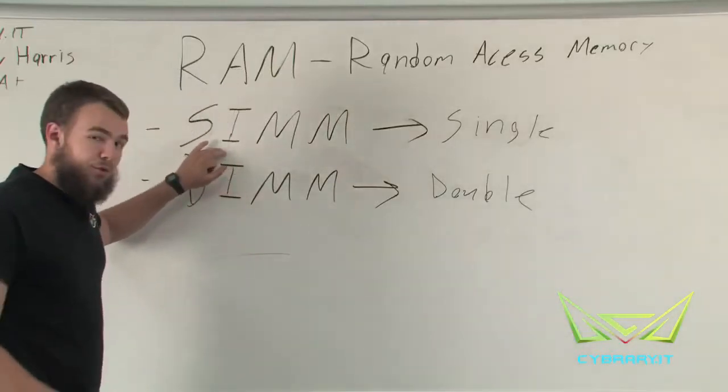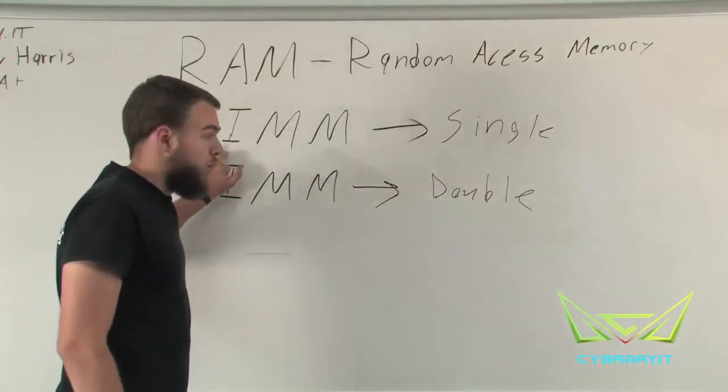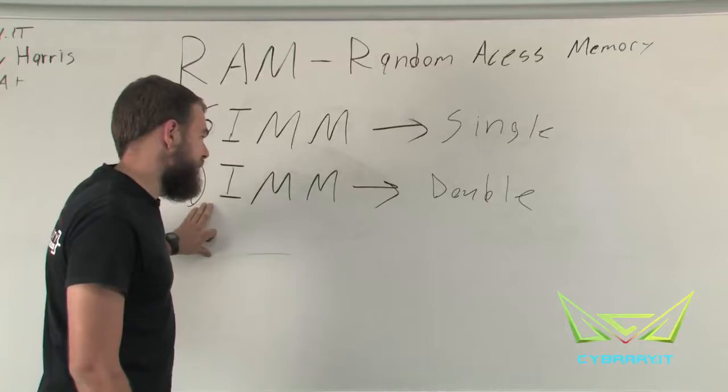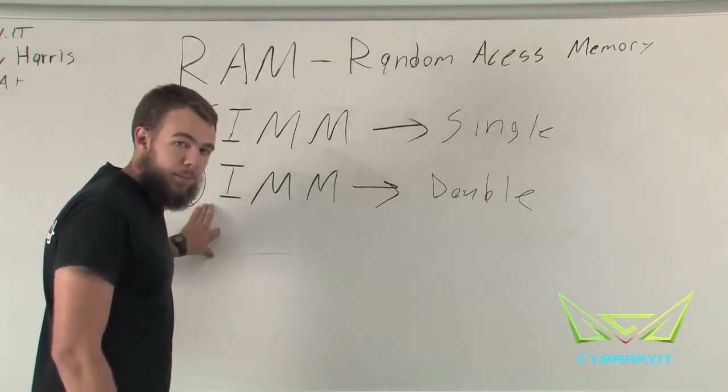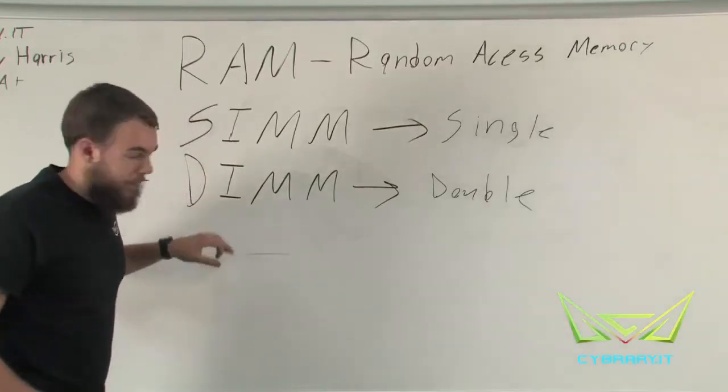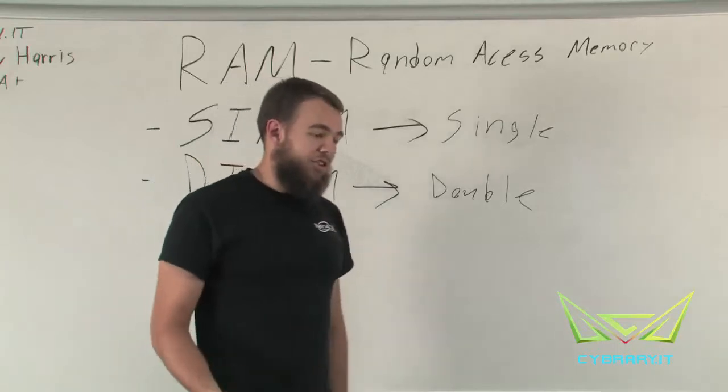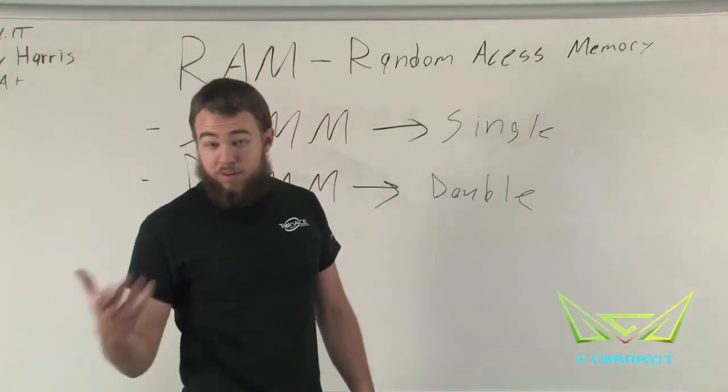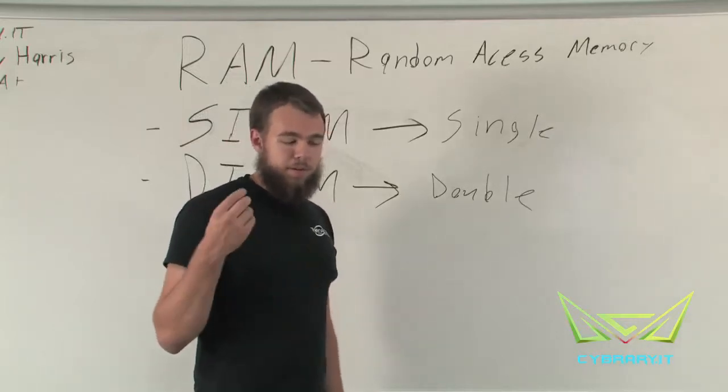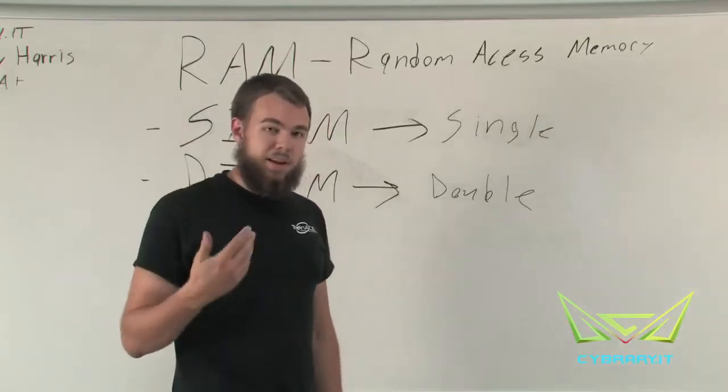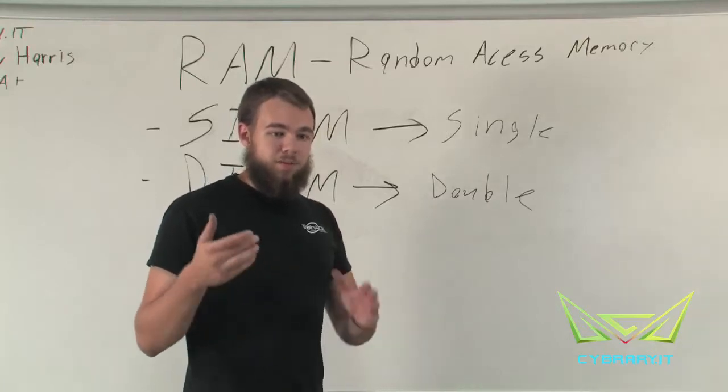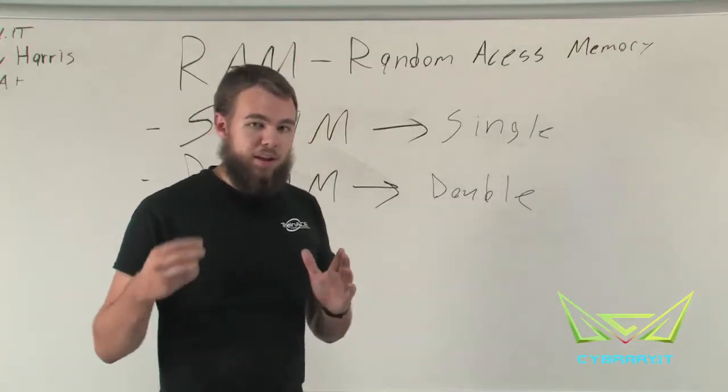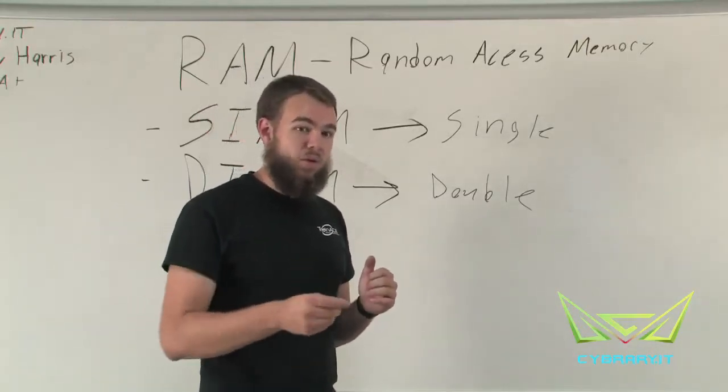SIMM actually stands for Single Inline Memory Module, while DIMM stands for Dual Inline Memory Module. SIMM refers to a memory module, or memory stick, that has a single group of memory that can be independently accessed. It's one group of memory that we can independently access at one time.